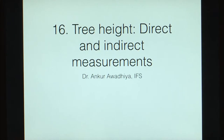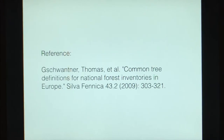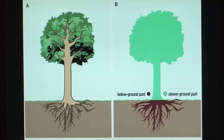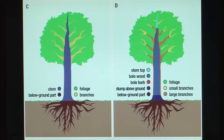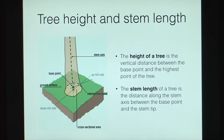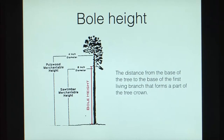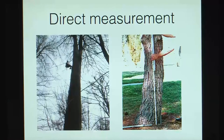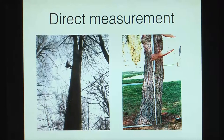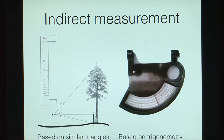Next, we looked at tree height — the direct and indirect measurements. We looked at how a tree is divided into various portions: the above-ground part, the below-ground part, the main stem, the branches, and so on. We examined the difference between tree height and stem length in different situations, and also merchantable tree height, bole height, total height, and canopy length. For direct measurement, you can go to the top of a tree and drop a string with a weight; the length of the string when taut gives the tree height, or you can use a scale directly along the tree.